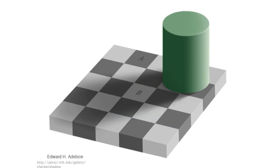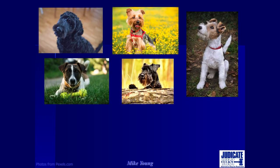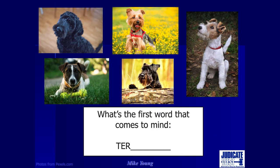So your brain's doing something in there. Let's try something else — eventually this will all make sense. I'm going to show you some pictures. You see these five pictures. Now I'm going to give you a word fragment and just tell me the first word that comes into your mind. Ready? You said terrier, didn't you?